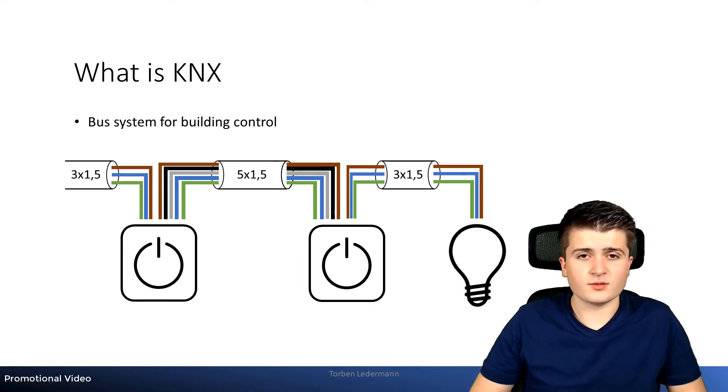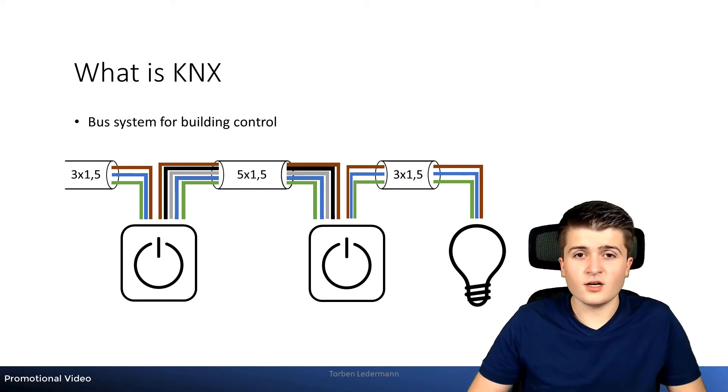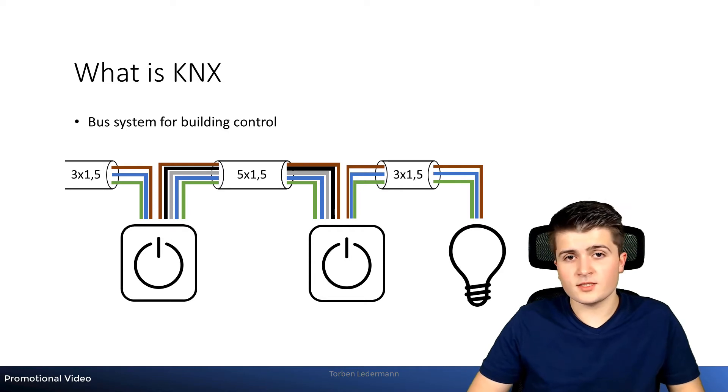But why the effort to use such KNX components? Well, therefore we have to take a look at the conventional installation. So here in this example you can see two switches and a light, a changeover circuit. And you can also see the necessary cables. So to the first switch we need three wires, to the second switch five wires, and to the light itself we also need three wires. So a lot of cable that we need in order to make the circuit work. And even then, higher level functions such as timers or central functions can only be implemented to a limited extent.